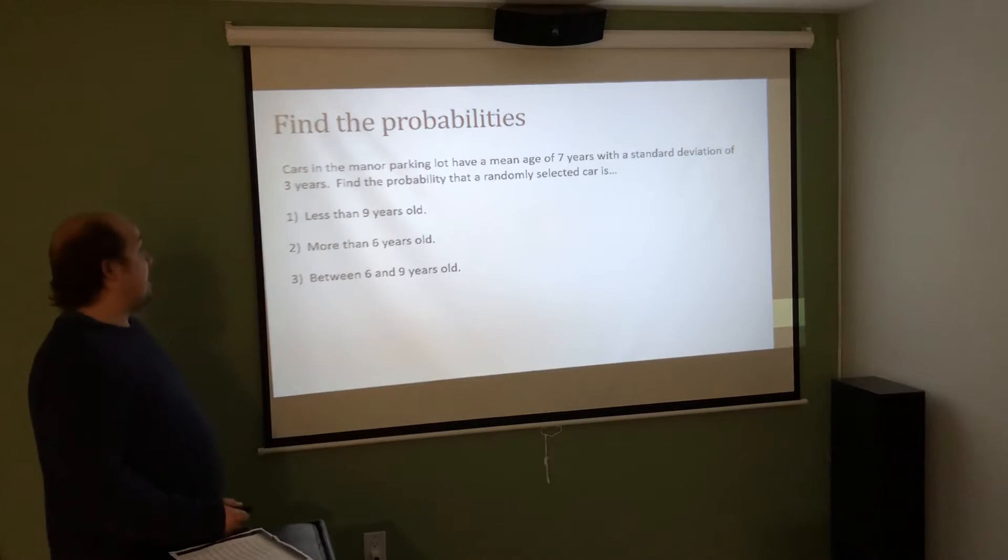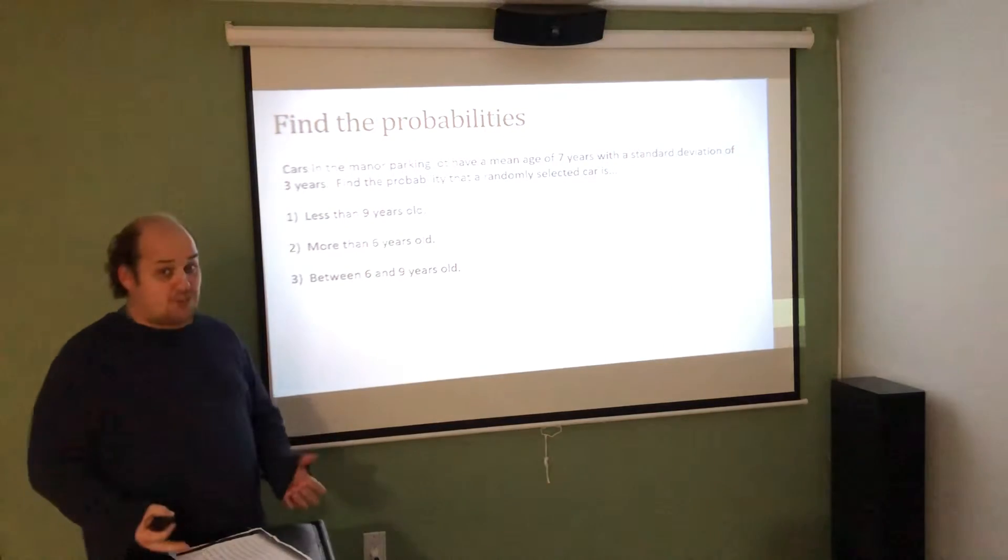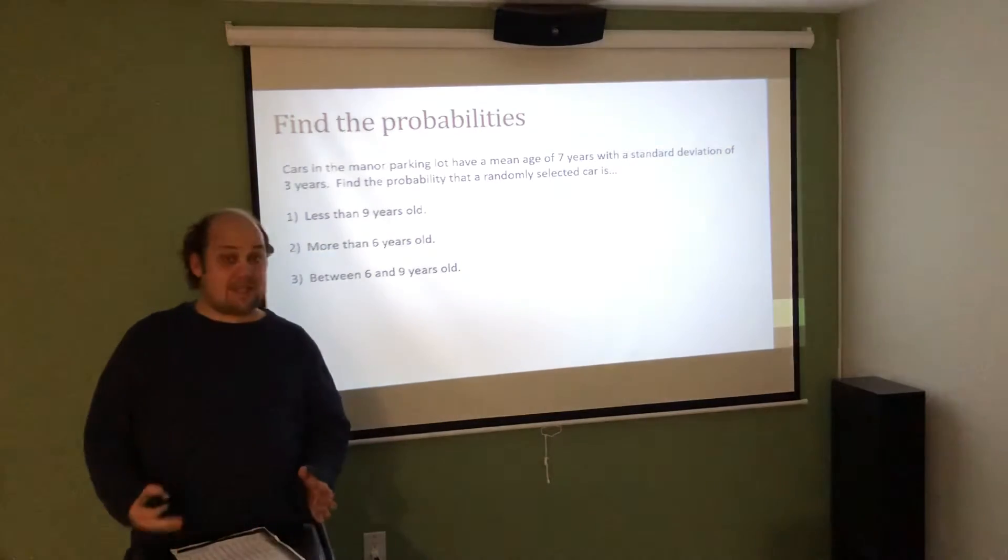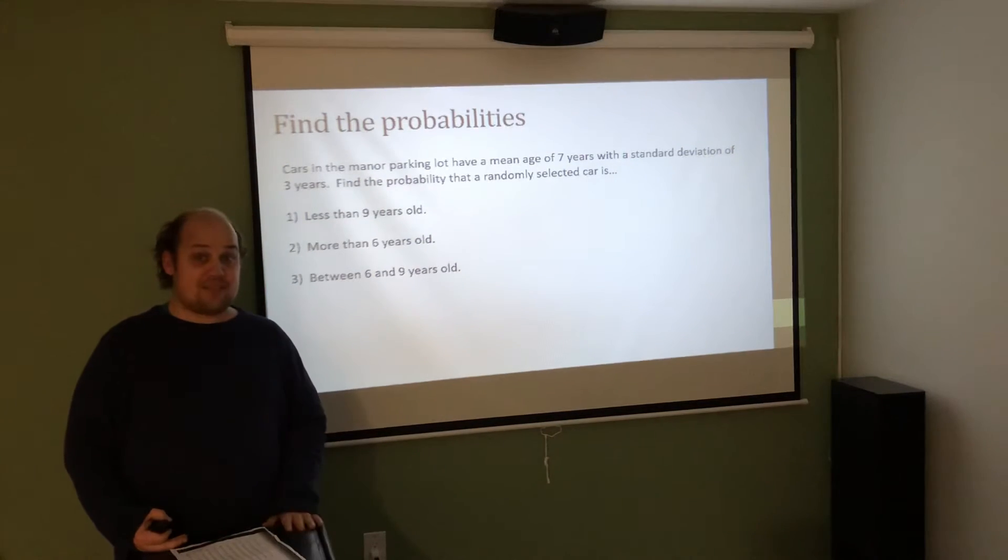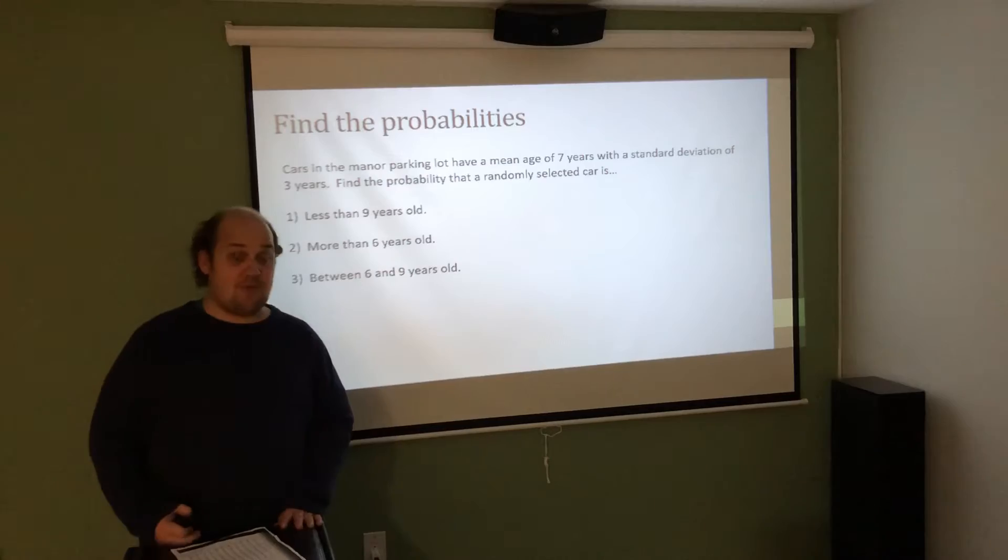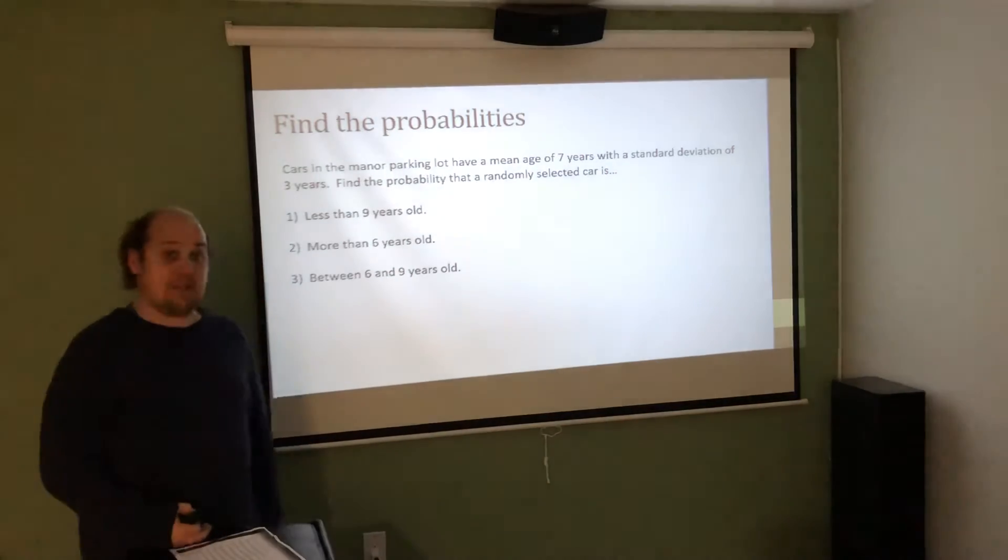So, let's say that cars in the manor parking lot have a mean age of 7 years with a standard deviation of 3 years. Find the probability that a randomly selected car is less than 9 years old, is more than 6 years old, or is between 6 and 9 years old. As always, I think it's better if you pause at this point before I show you the answers to see if you can try these problems on your own before you're in class.